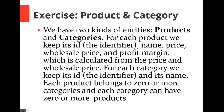The first question is about product and category. We have two kinds of entity: a product and a category. For each product we keep its ID as the identifier, its name, its price, its wholesale price, and profit margin, which is calculated from the price and wholesale price. For each category we keep its ID and its name. Each product belongs to zero or more categories, and each category can have zero or more products. You can pause the video at this point and try to come up with a solution.